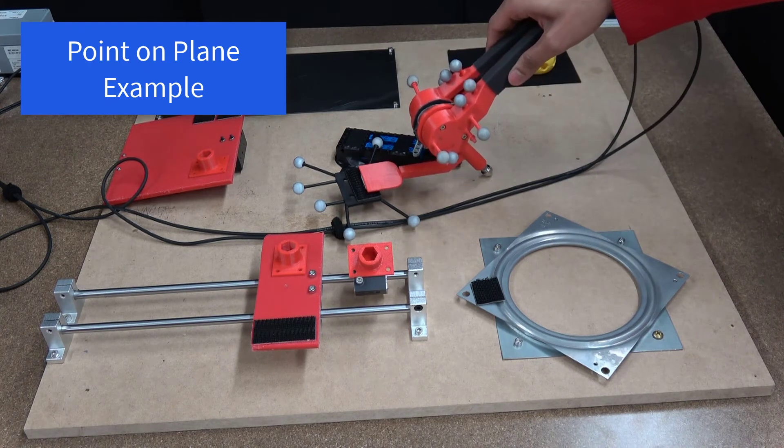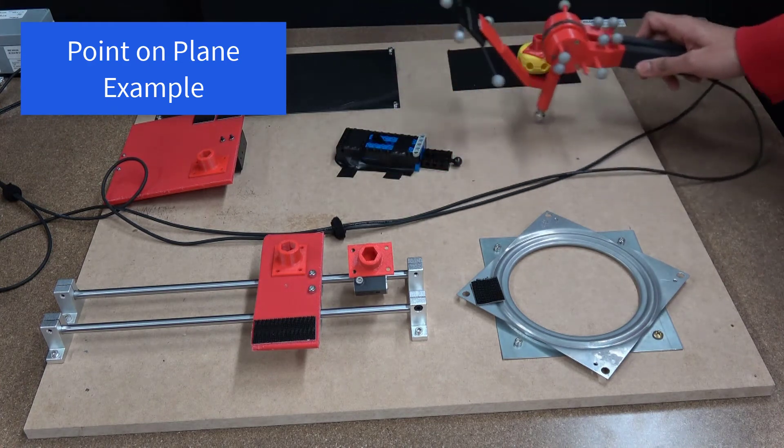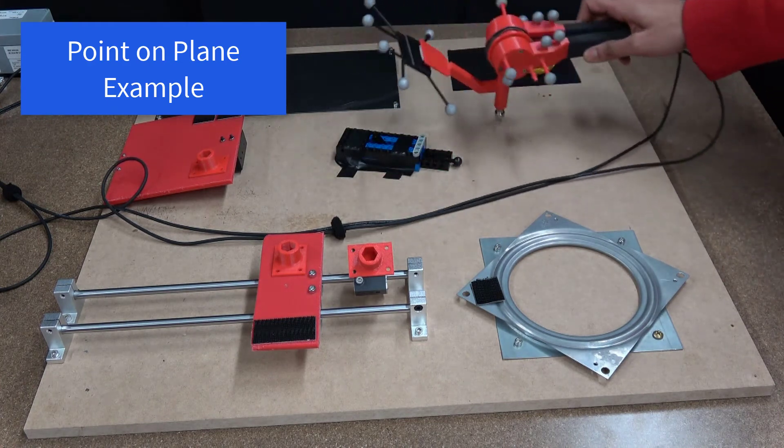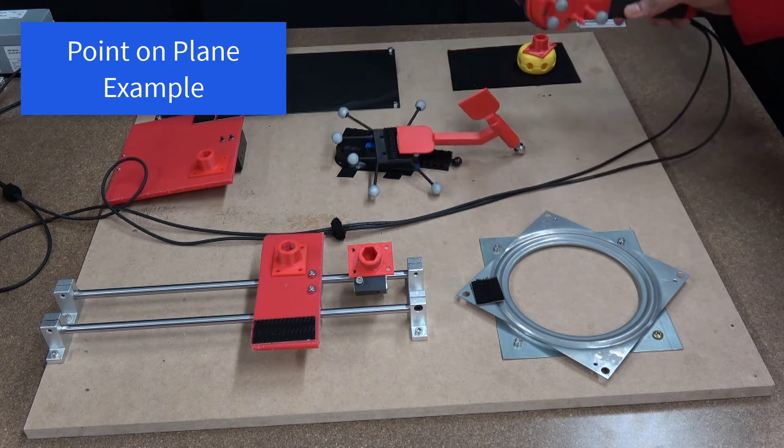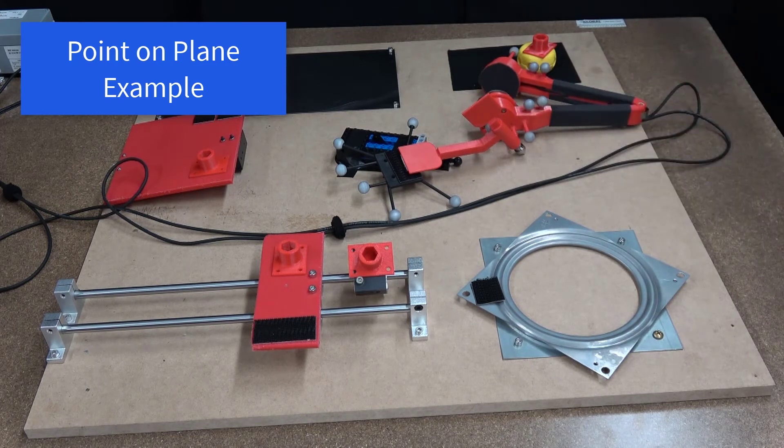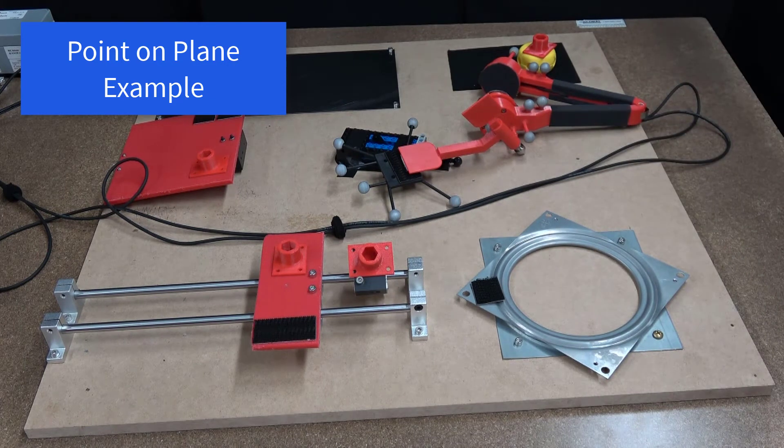The point on plane constraint is shown as an example. The motion capture markers are placed at an arbitrary location on the stylus. The demonstrator grasps the stylus and moves the steel tip against the plane. Using the recorded trajectory, the method estimates the plane location.